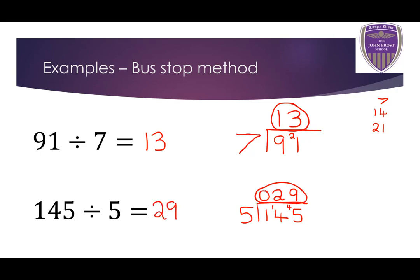But what happens if there is a remainder after we get to the final digit? What happens if we go into decimals? Well, let's have a look.